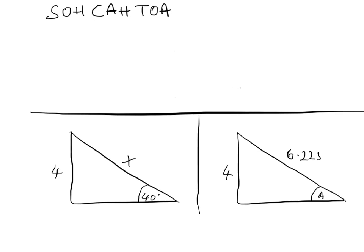Here's the key tip for solving these problems: label the sides that you're given in the question. Here we're given the opposite and the hypotenuse. Label those sides and ignore the one that's empty. This tells us we're interested in opposite over hypotenuse, which corresponds to sine. Sine equals opposite over hypotenuse, so the sine of the angle — sine of 40 degrees — equals 4 over x, the opposite over hypotenuse.